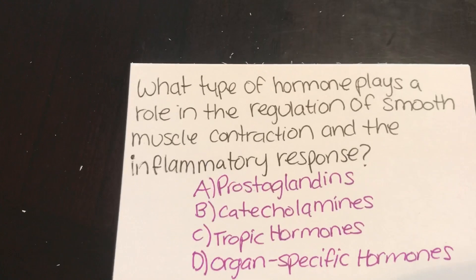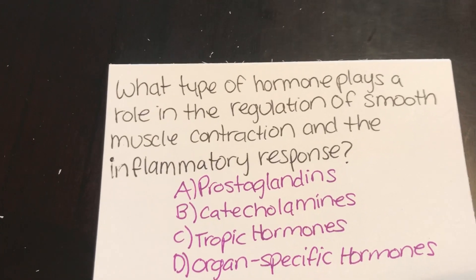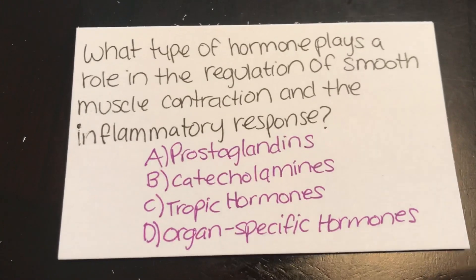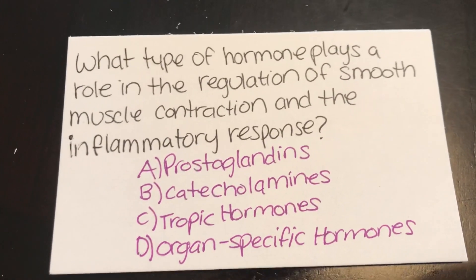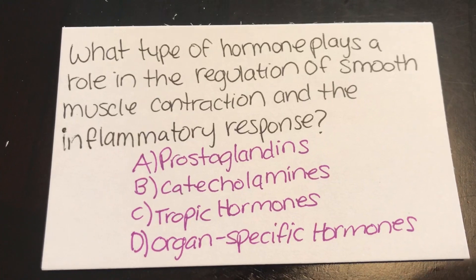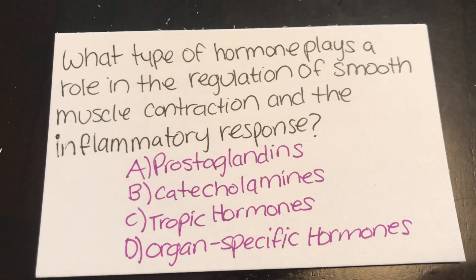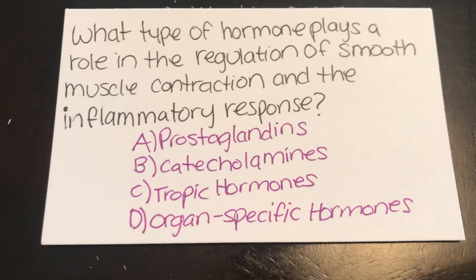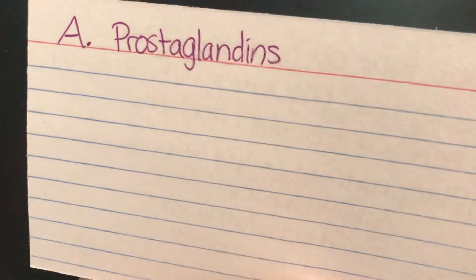Which type of hormone plays a role in the regulation of smooth muscle contraction and the inflammatory response? A, prostaglandins. B, catecholamines. C, trophic hormones. Or D, organ-specific hormones. Answer: A, prostaglandins.